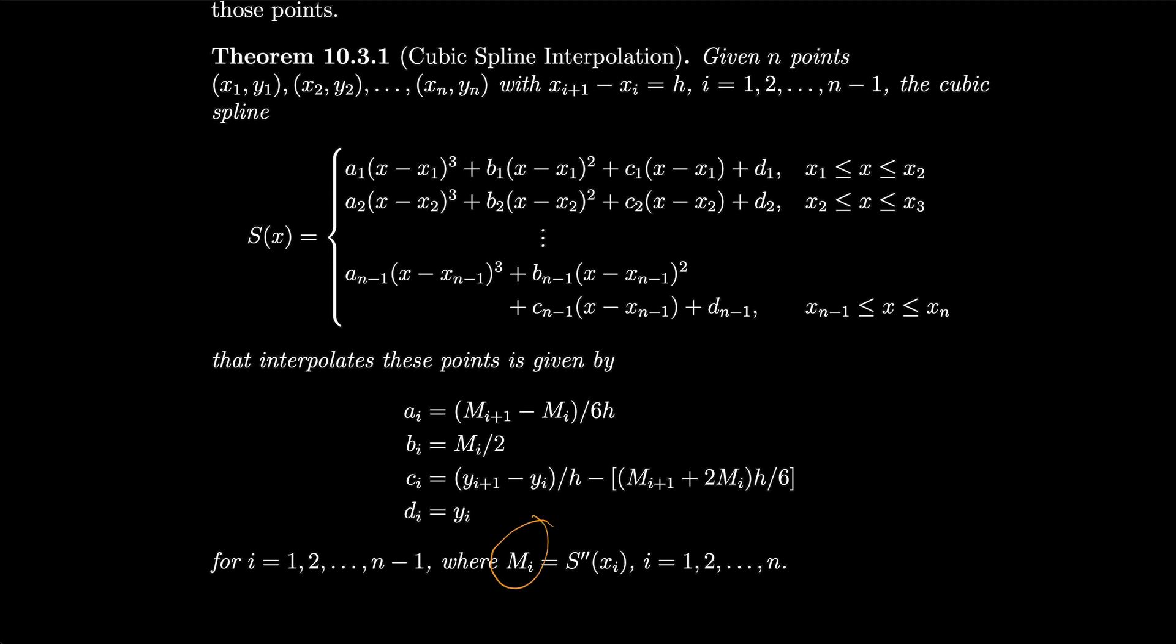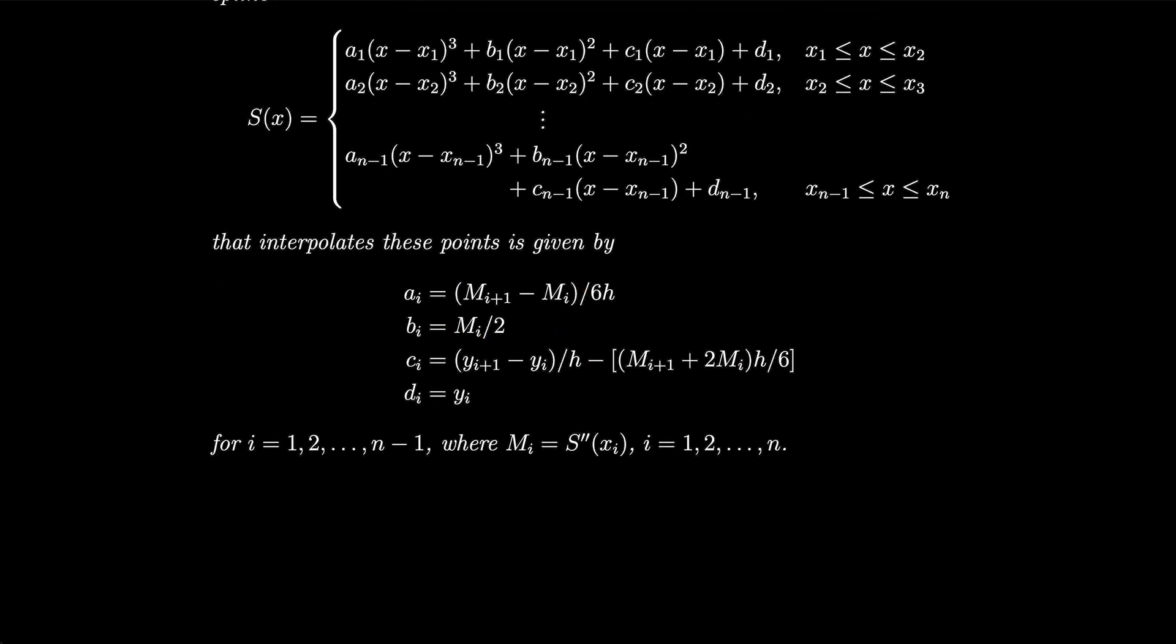The mi's are the second derivative of the spline at xi. So as we can see, the coefficients are determined basically entirely by these m's that come in here, the second derivative that pops up. So in order to come up with a unique cubic spline, we have to come up with some restrictions on the m's. That way we can actually calculate something here.